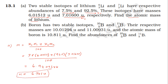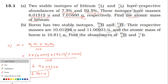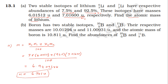The second question: boron has two stable isotopes, boron-10 and boron-11. Their respective masses are 10.01294 and 11.00931 atomic mass units. The atomic mass of boron is 10.811. Find the abundance of boron-10 and boron-11.